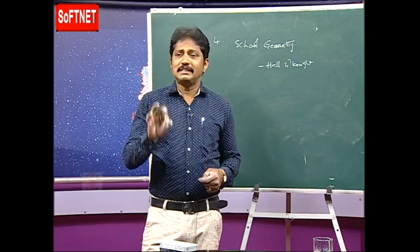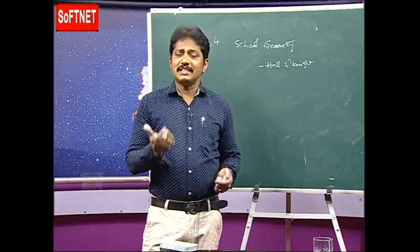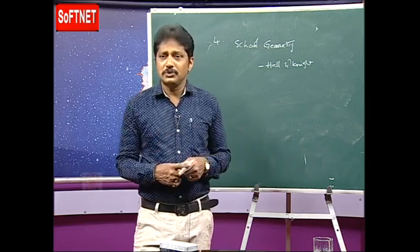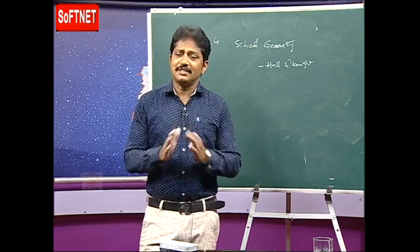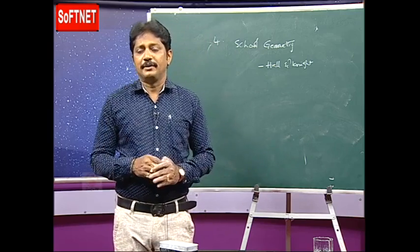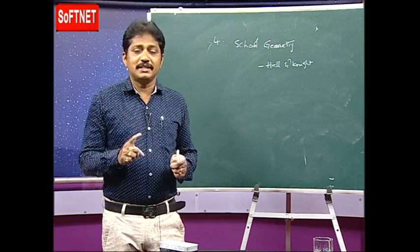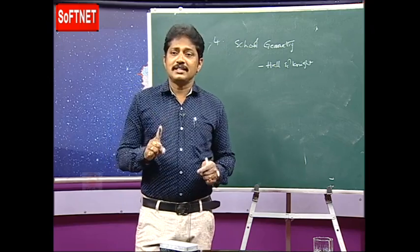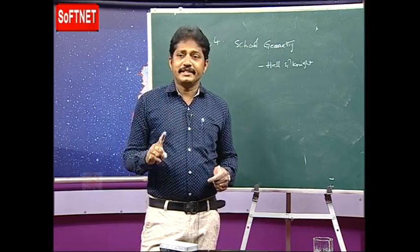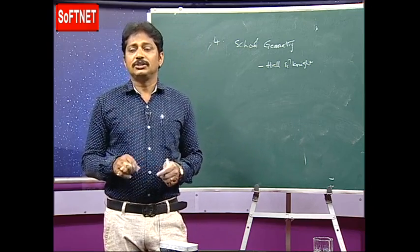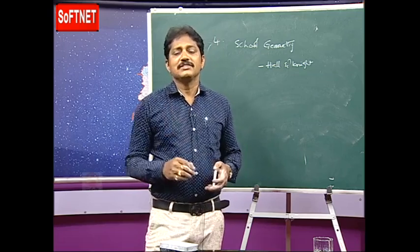A closed plane figure bounded by three line segments is called a triangle — that is a definition. But when you define an angle as the union of two rays, that is an explanation, not a definition. We can classify words as defined terms and undefined terms, and similarly classify statements. A statement is a sentence which is either true or false but not both. All mathematical sentences are not mathematical statements, but every mathematical statement is a mathematical sentence. You should refer to various books for this kind of clarity.